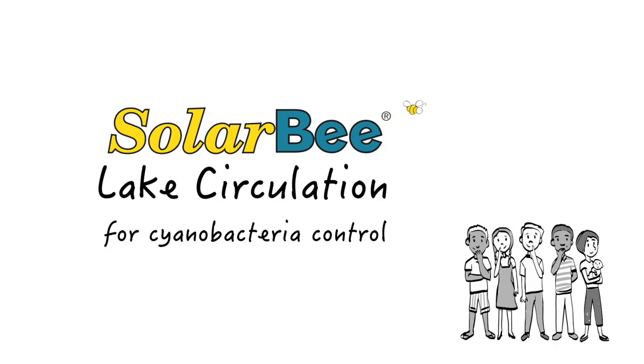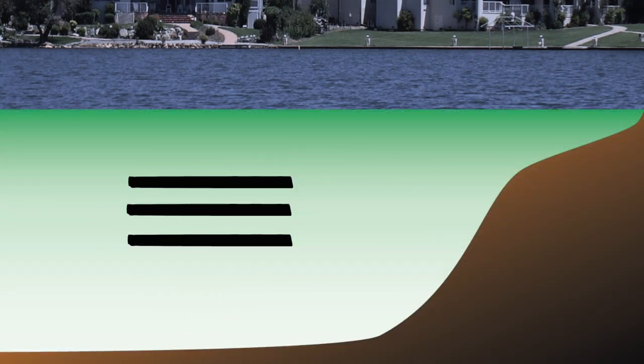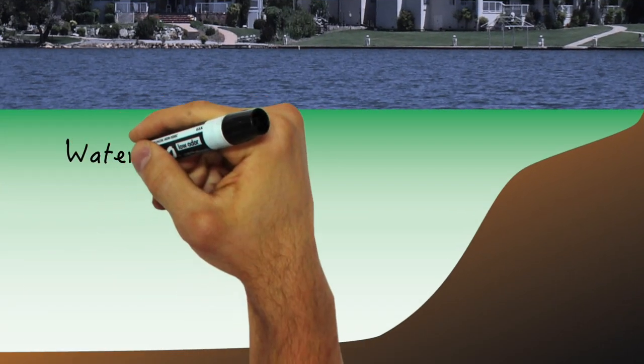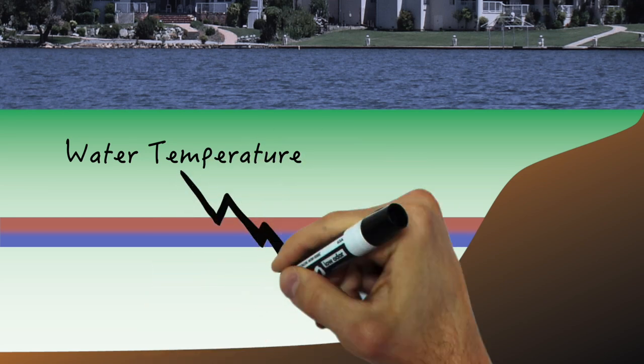And it all starts with a lake. Lakes tend to form temperature layers in the hot summer months. Generally, every lake will split into two sections determined by a layer of water where a large temperature difference occurs.